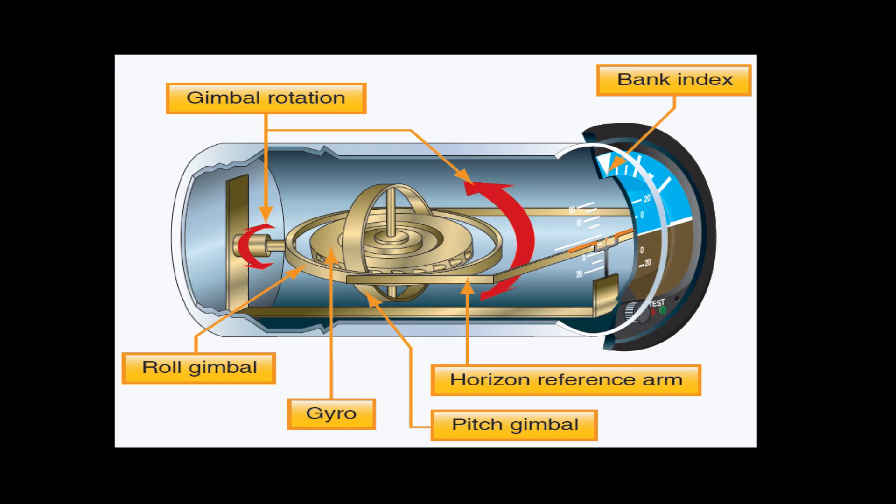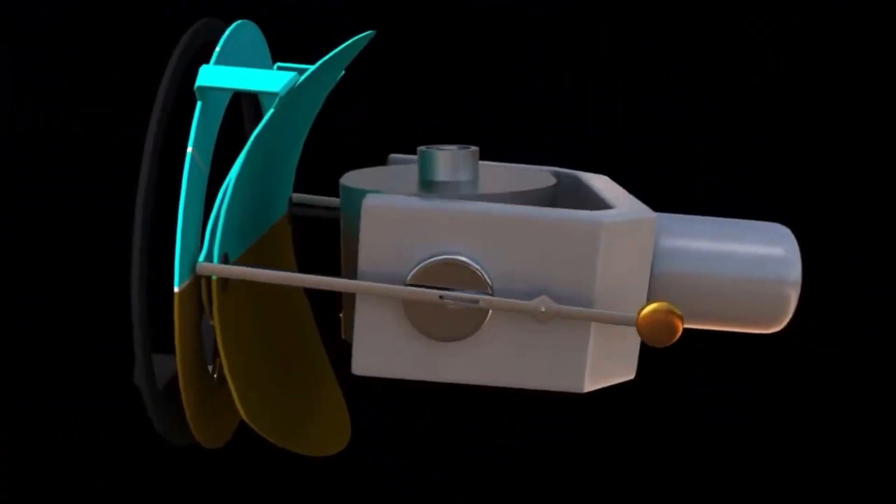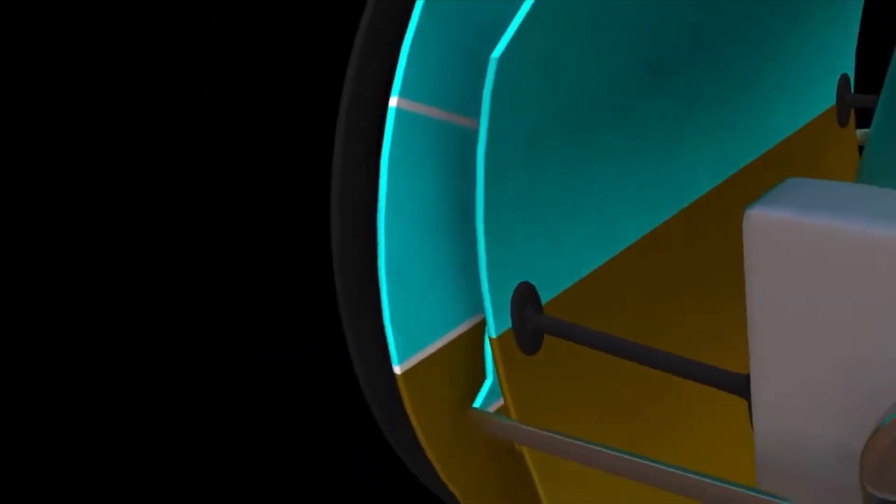The gyro, mounted in a sealed housing, spins in a horizontal plane about the vertical axis. The horizon bar is linked to the gyro by a lever. The two gimbals holding the gyro, one for roll and one for pitch, allow the case to move freely while the gyro maintains its level orientation as the airplane maneuvers.